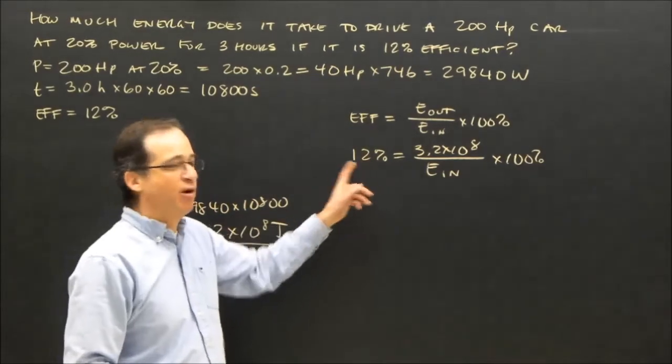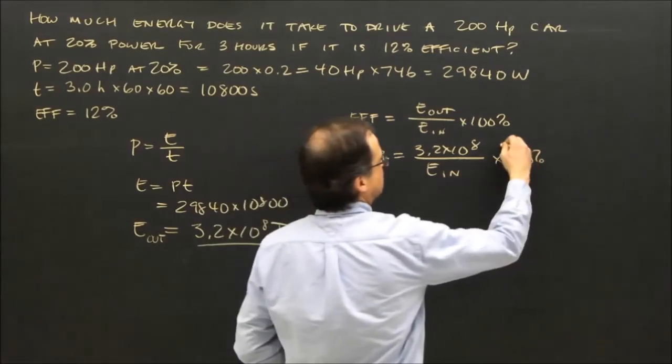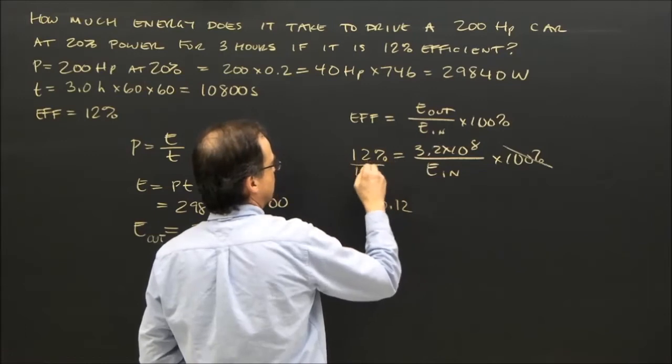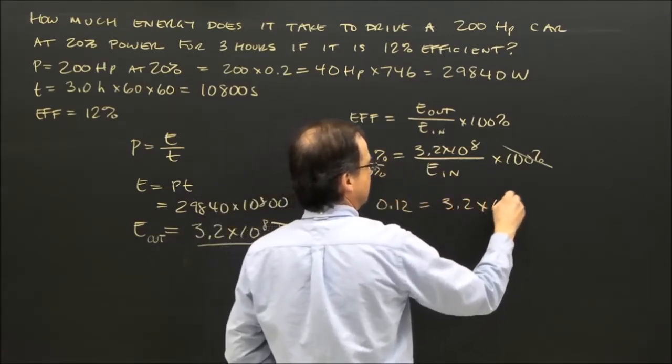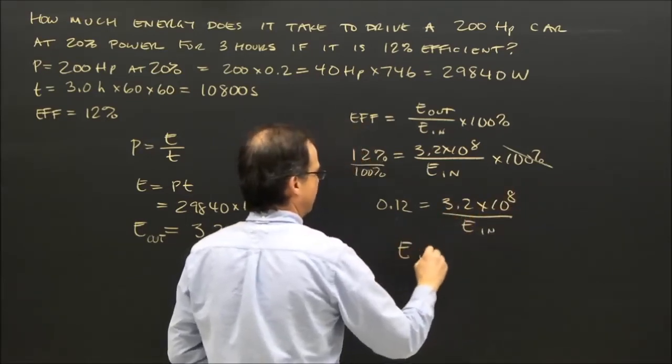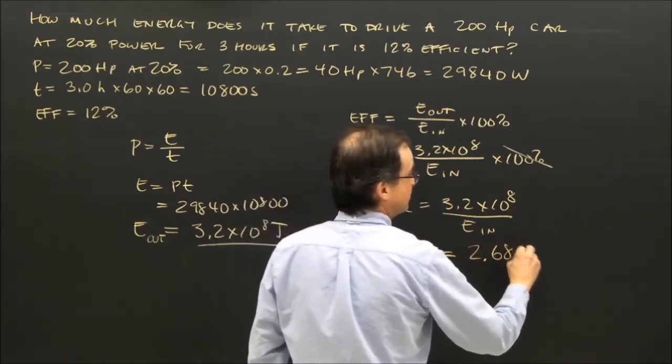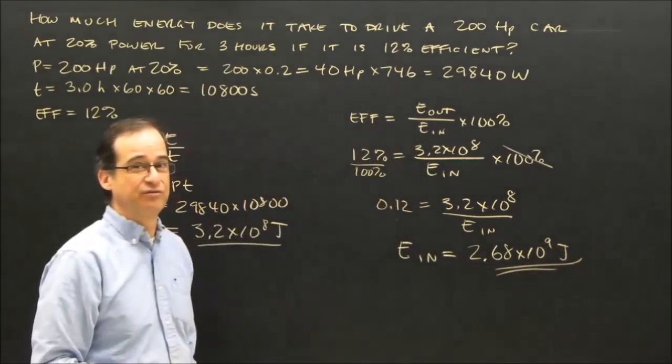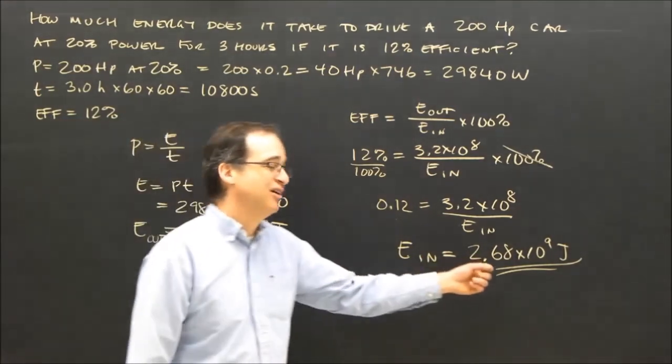Now, as you know, 12% is a decimal of 0.12. But the way we get that is we divide this by 100%, we divide this by 100%, we get 0.12. And so we get that is equal to 3.2 times 10 to the 8 divided by the energy in. The energy in, which is what we're looking for, is 2.68 times 10 to the 9 joules. That's how much energy the fuel had to have to get us 3.2 times 10 to the 8. So this must be 12% of this number.